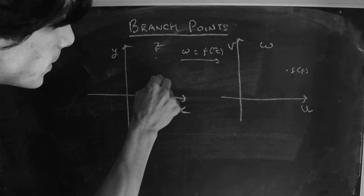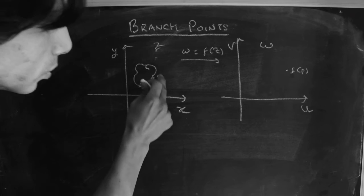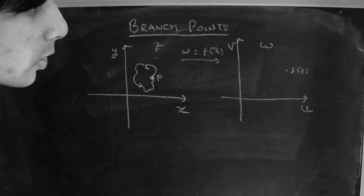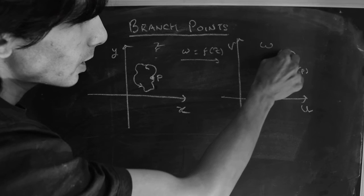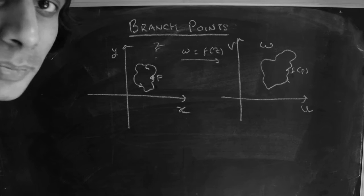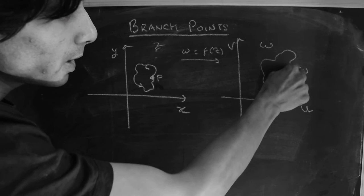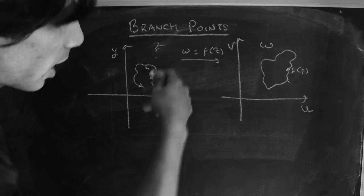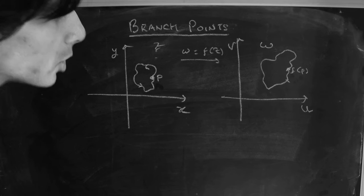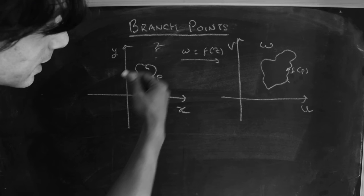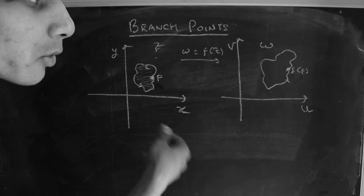Starting from the point p, let's traverse an arbitrary path and return back to point p — so you're making some arbitrary loop and coming back to p in the z-plane. Now there are two things that could happen in the w-plane. In one case, as you traverse this path you might traverse some path in the w-plane and return back to the point f(p). If this is what's happening, then inside this region there are no branch points — this is what you'd expect an ordinary function to behave like.